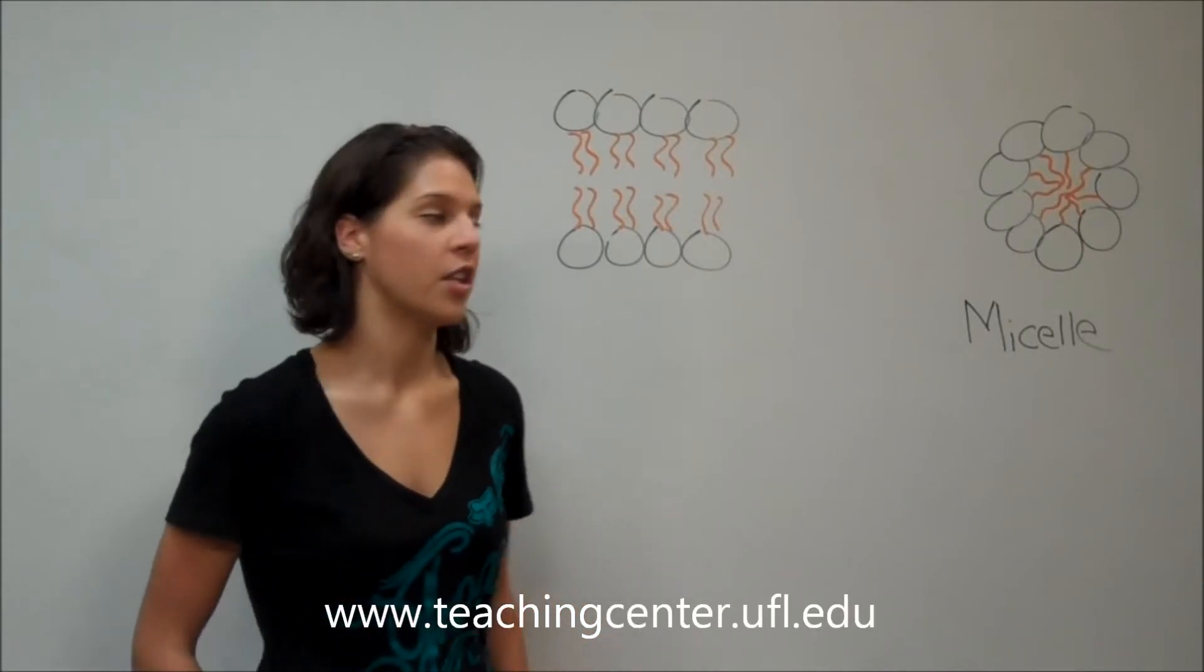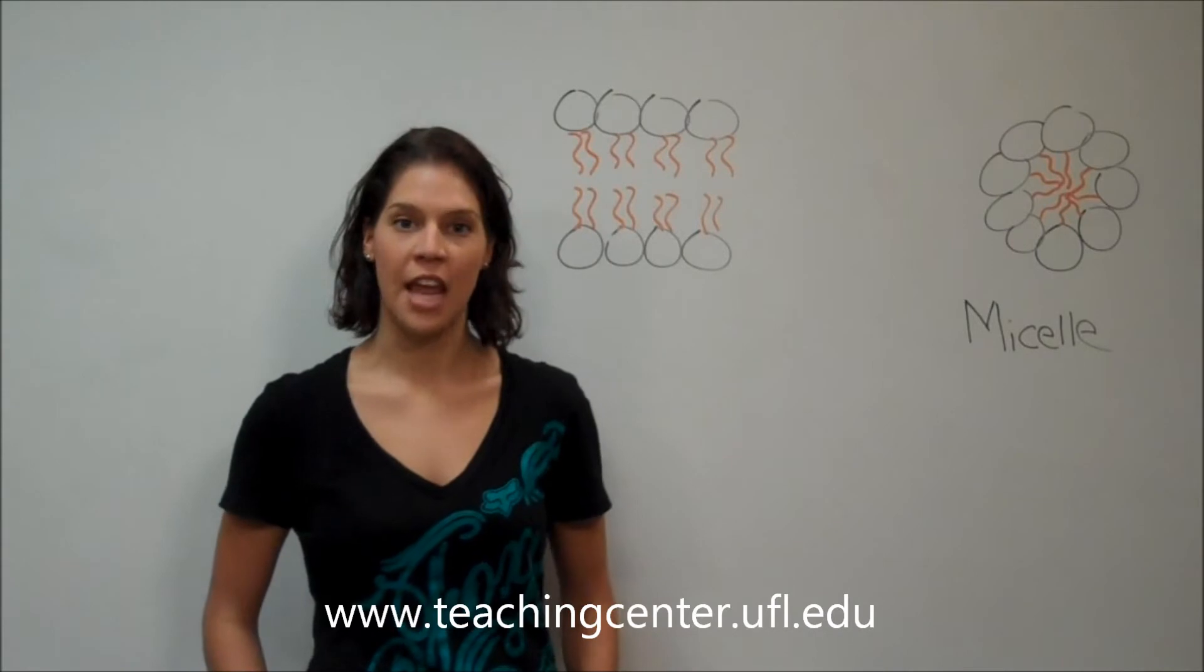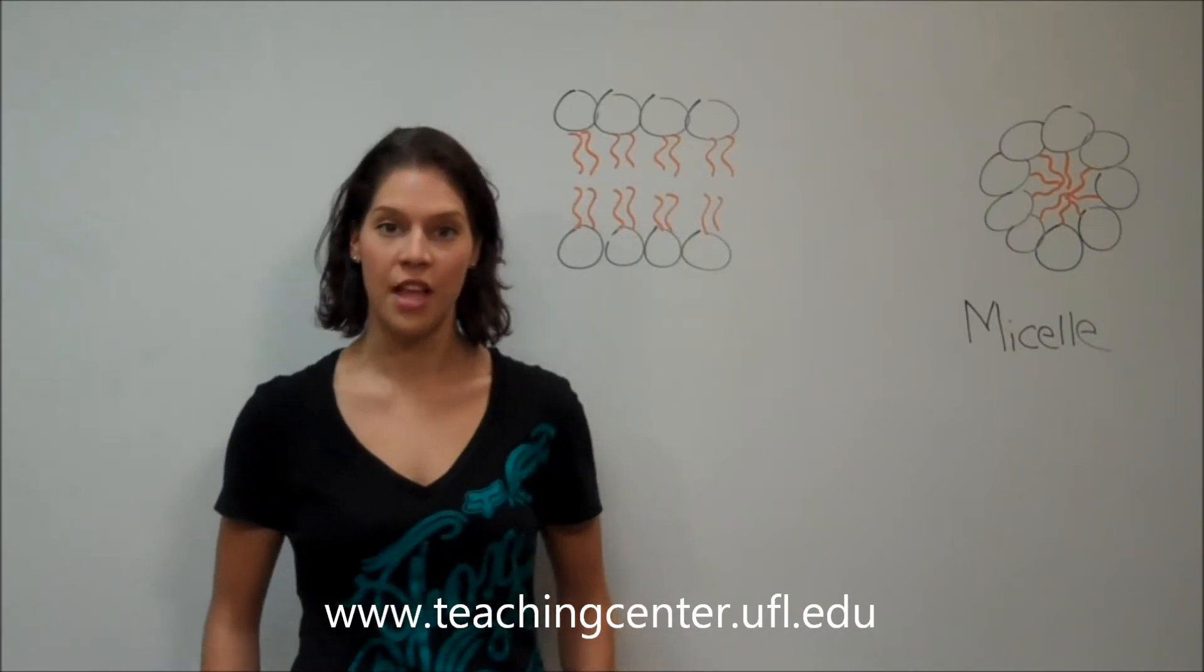So now we're going to go on to number seven of lecture 15. The question states, why would phospholipase A2 be an effective component of snake venom which causes cell lysis?